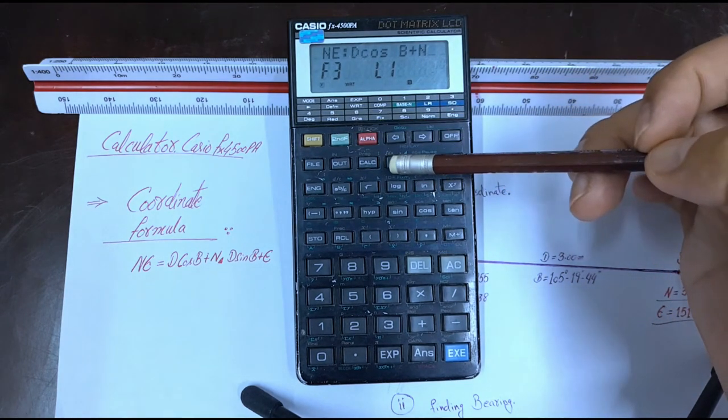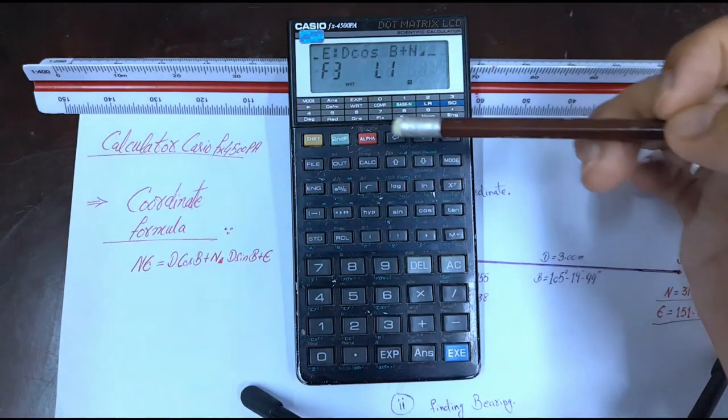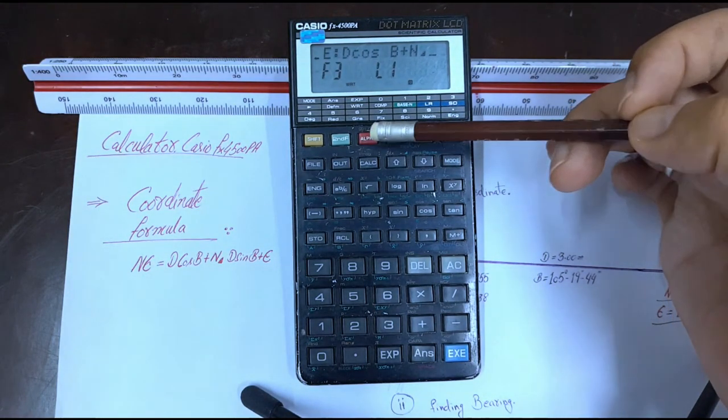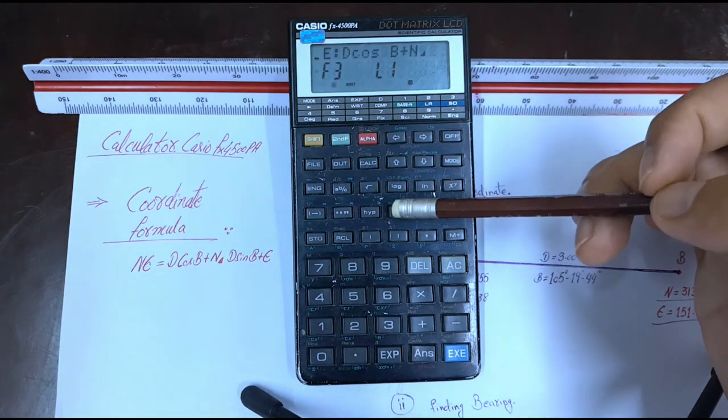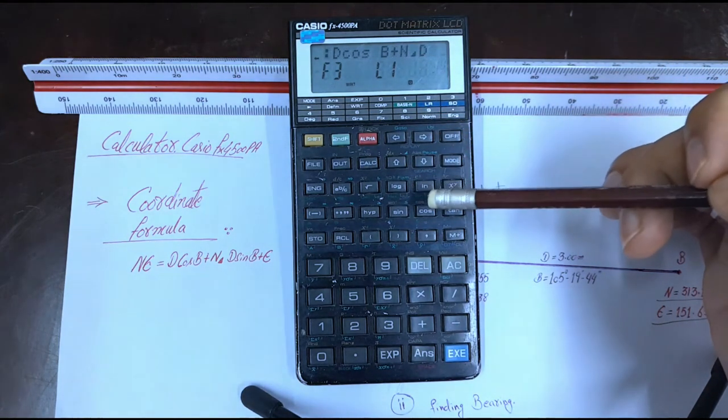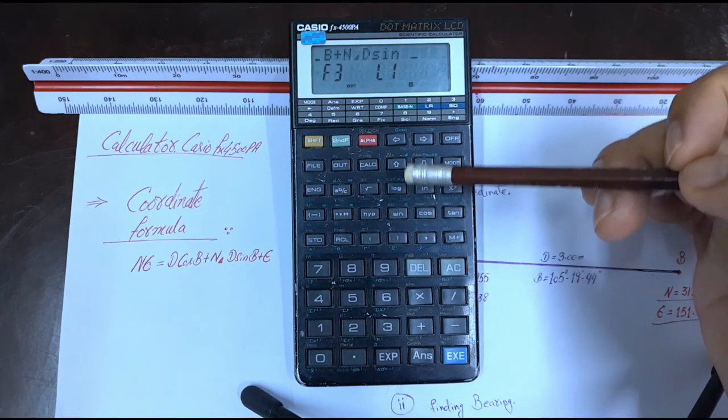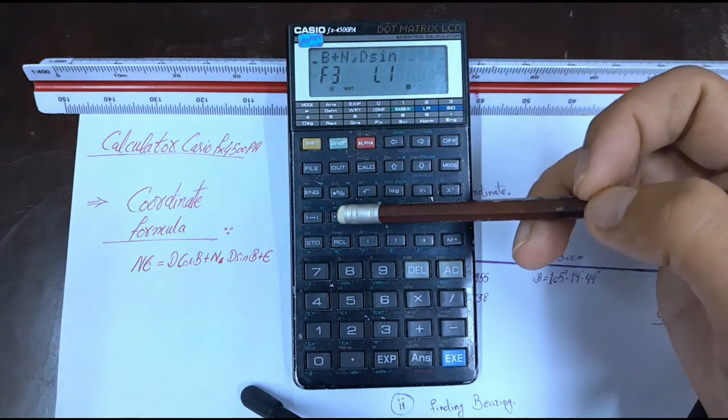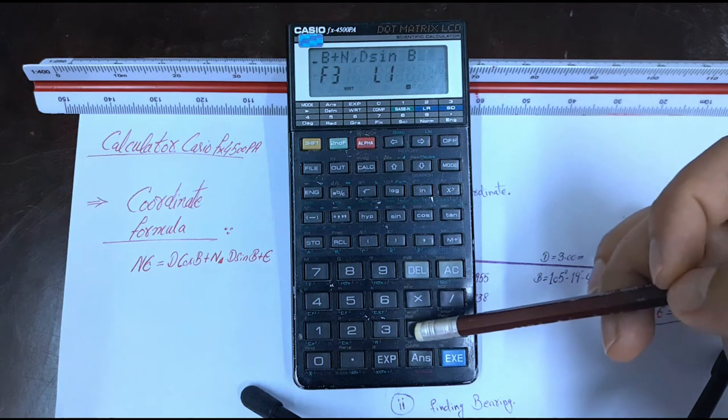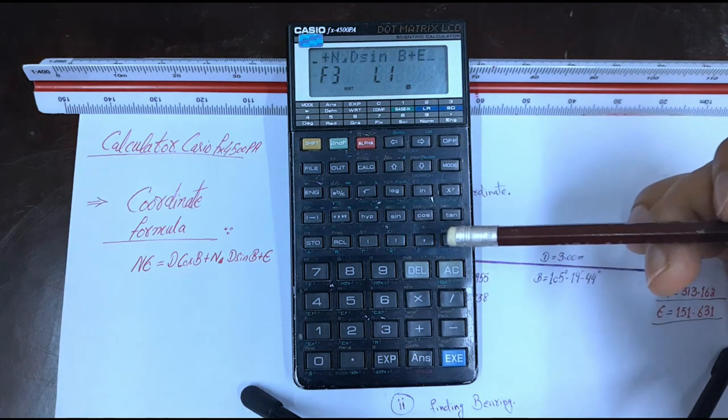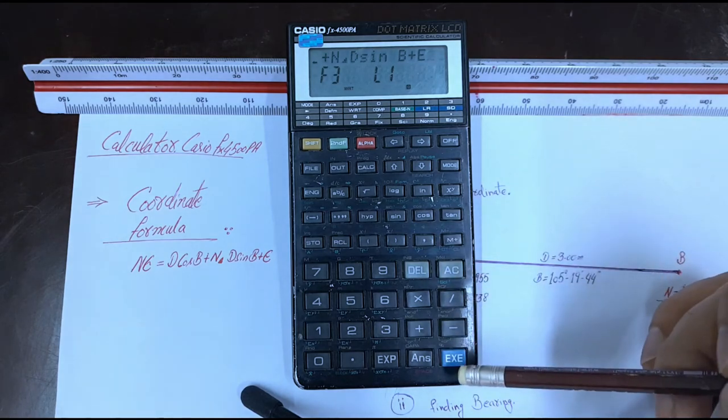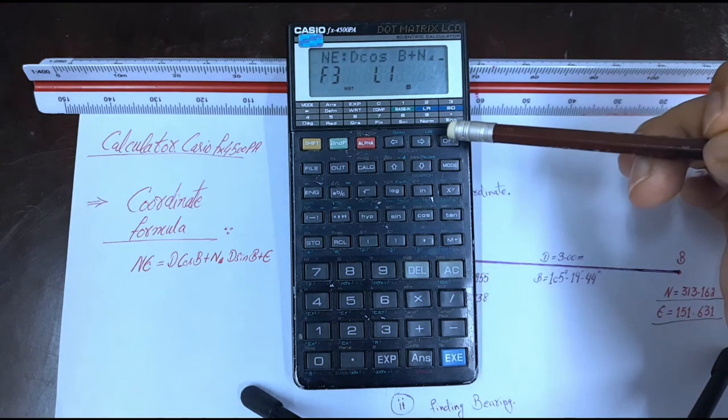D plus D plus alpha N, D, second shift, upper arrow, alpha D, D, D, EXE, plus alpha E, EXE. Then off.